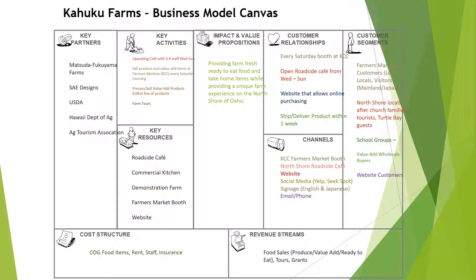Moving to customer relationships: they have a Saturday booth at the KCC farmers market, which is where they engage with their farmers market customers. Their roadside cafe is open Wednesday through Sunday, so their north shore locals, after-church families, and tourists know when to find them. They also have a website that allows for online purchasing, and they ship and deliver products within one week — setting the expectation for their value-add and website customers.